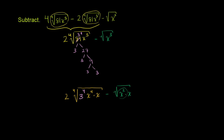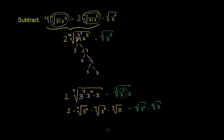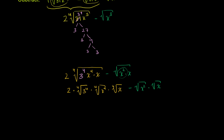Let me write it explicitly. This is the same thing as the 4th root of 3 to the 4th, times the 4th root of x to the 4th, times the 4th root of x, and 2 is being multiplied times all of that. And then over here it's minus the principal square root of x squared times the principal square root of x.